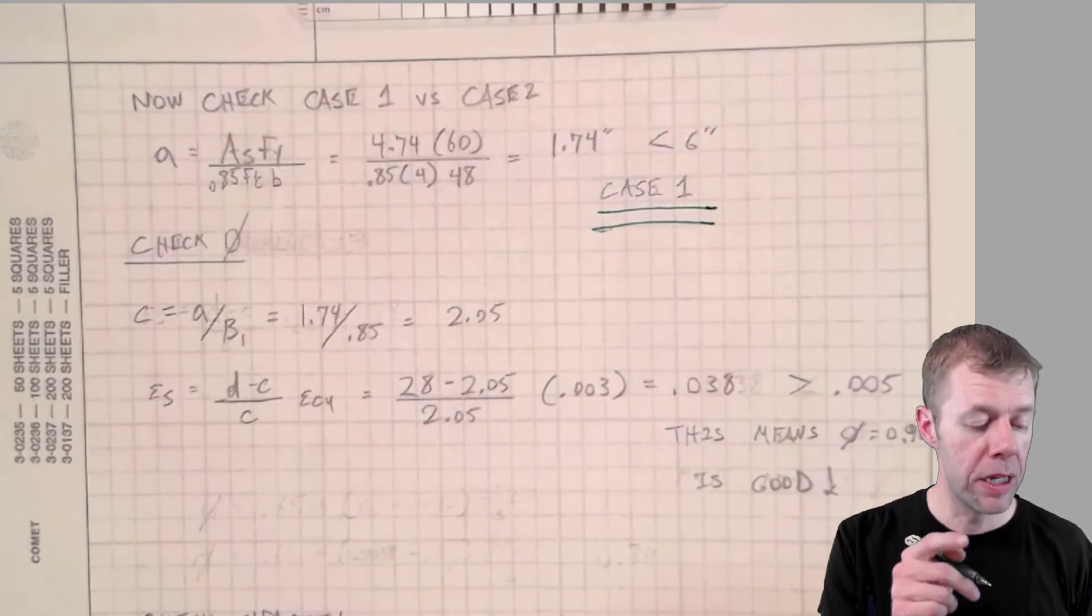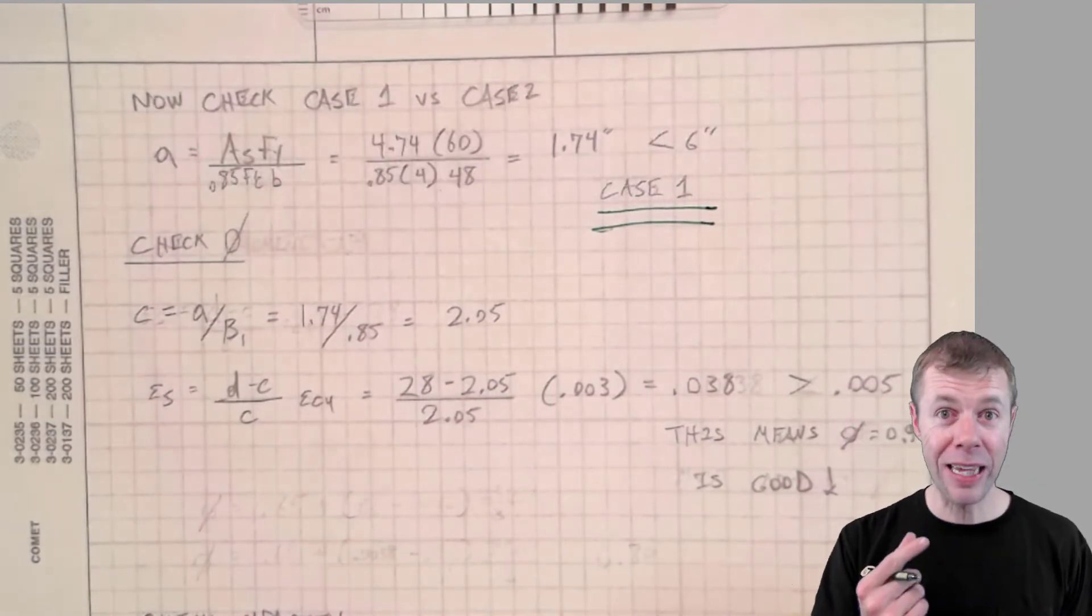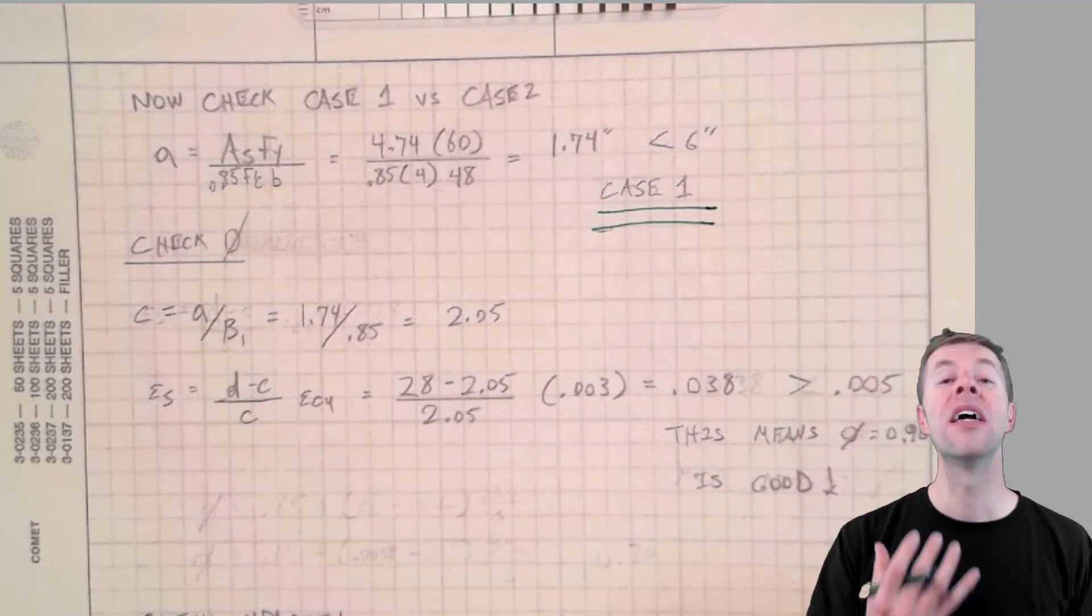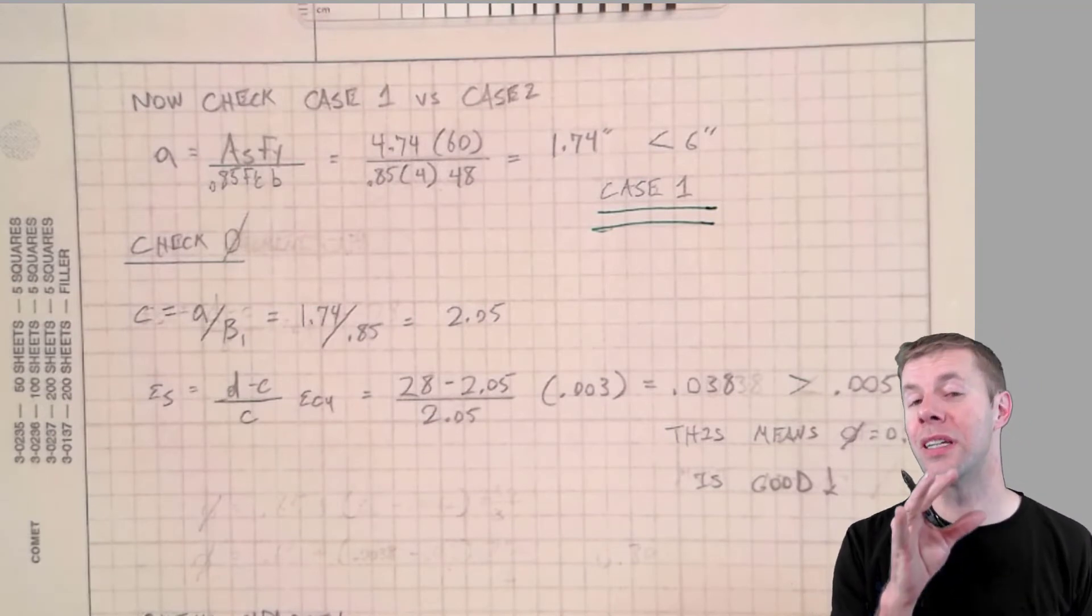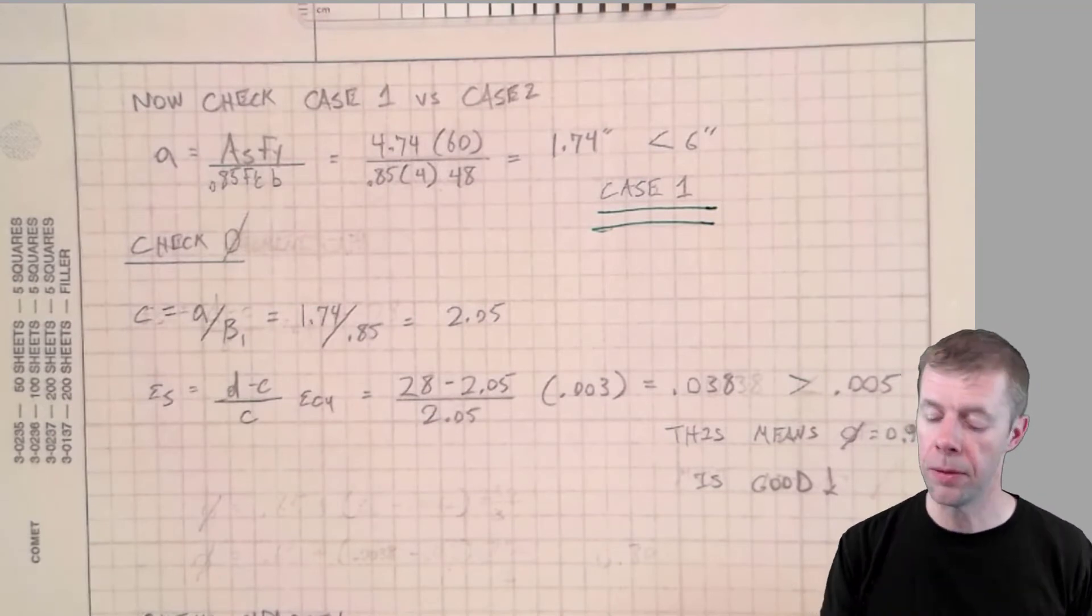And guess what? If this is my beam and I'm designing it, I'm gonna make it be in case 1. Case 1 is an efficient section. That's where you want it to be.